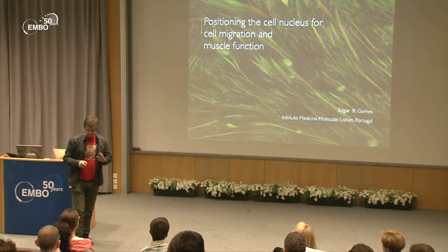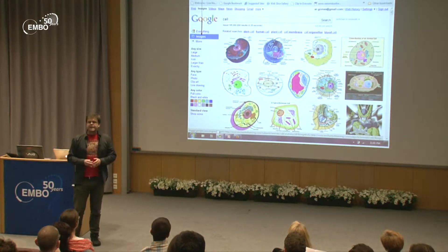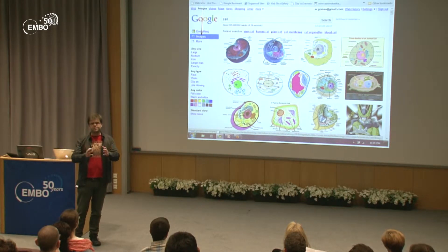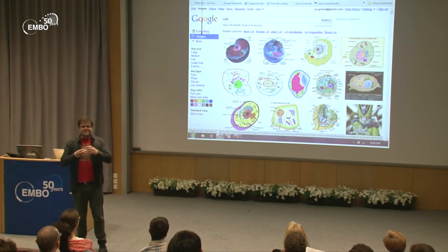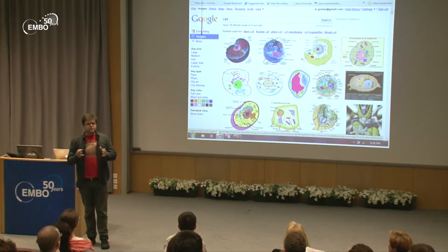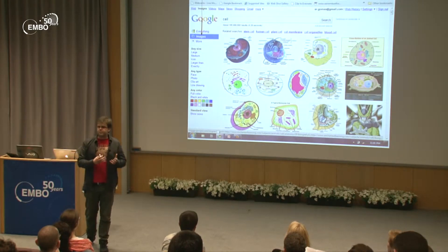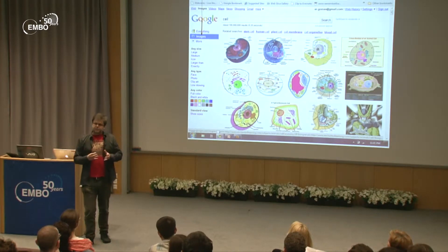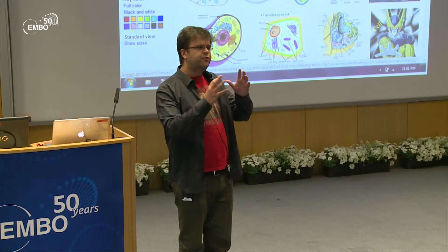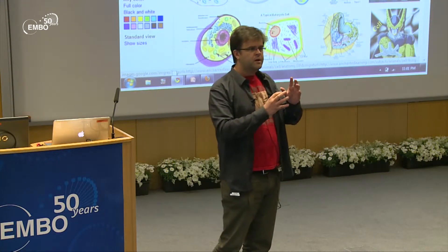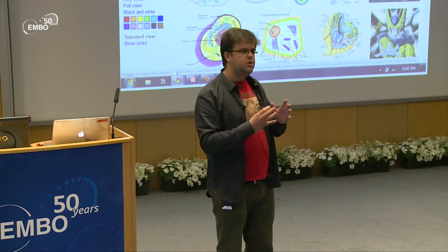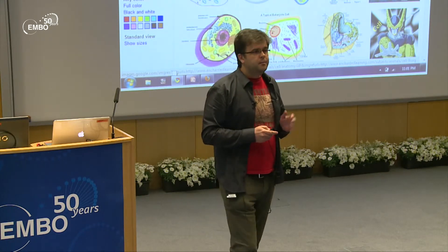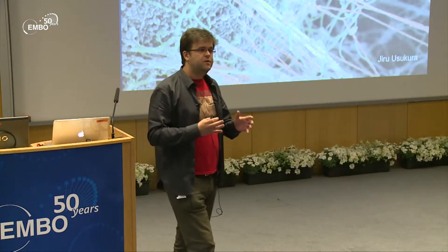If you go online and you search for the word 'cell', this is the type of image that you see — a very round, very nice bowl with things inside which are called organelles. But these organelles are not really floating around. One thing I'm interested in is how these organelles are distributed throughout the cell, what is the function of this distribution, and how they are connected with each other — usually through the cytoskeleton. The main organelle we are interested in is the nucleus.